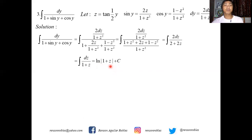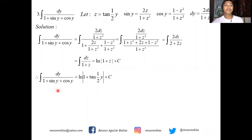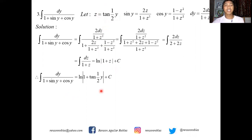Replacing z with tangent of half y, the final answer for the integral of dy over (1 + sin y + cos y) is ln|1 + tan(½y)| + C.